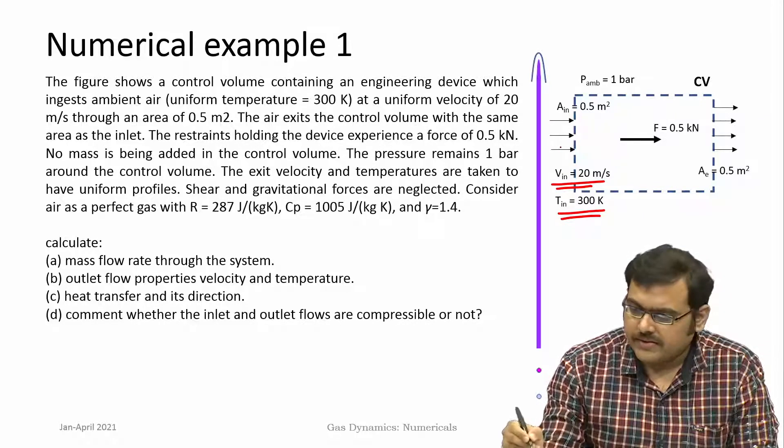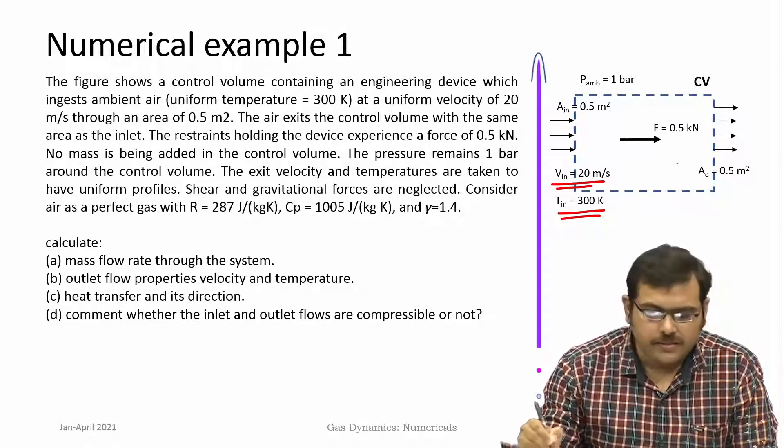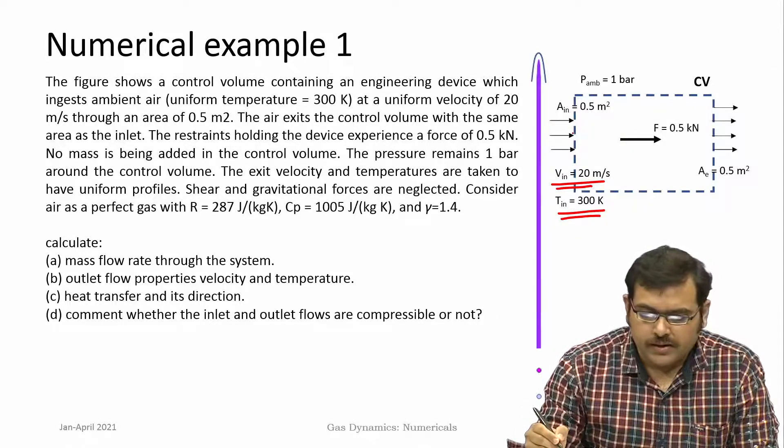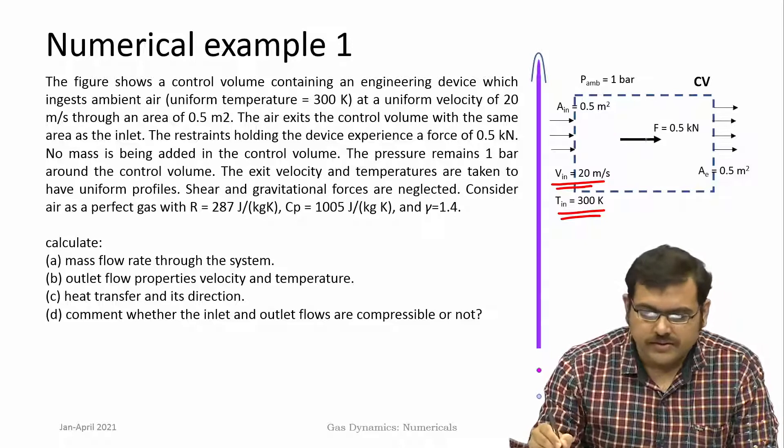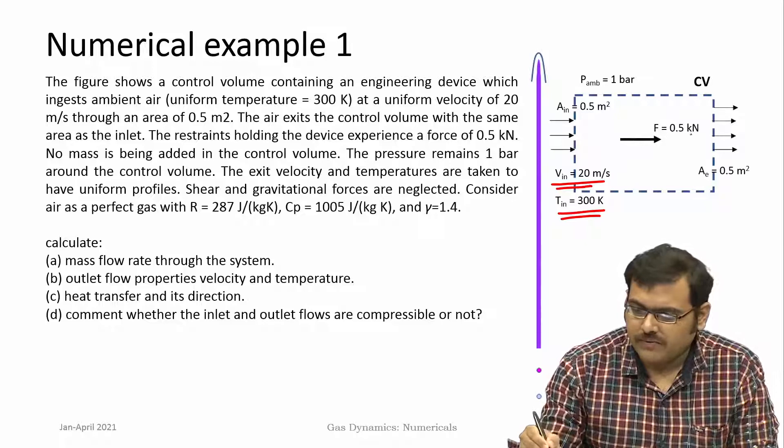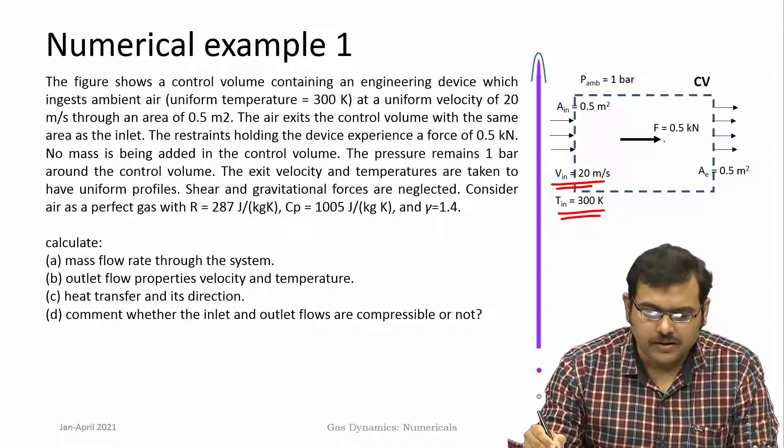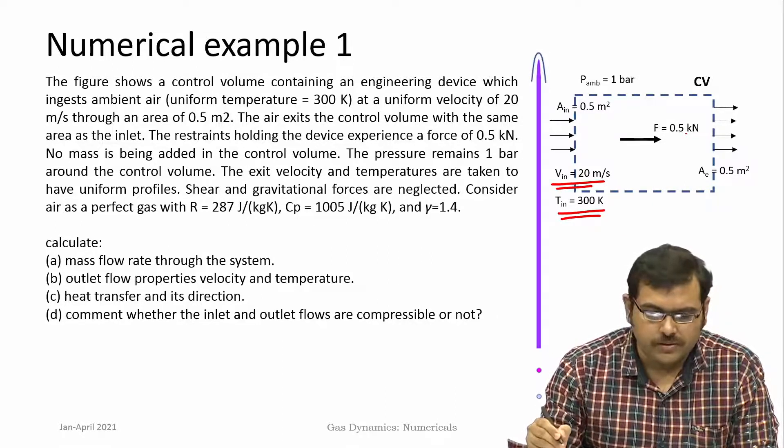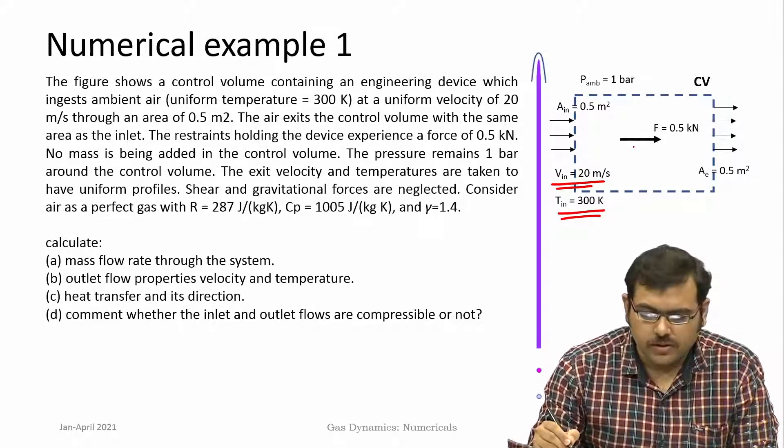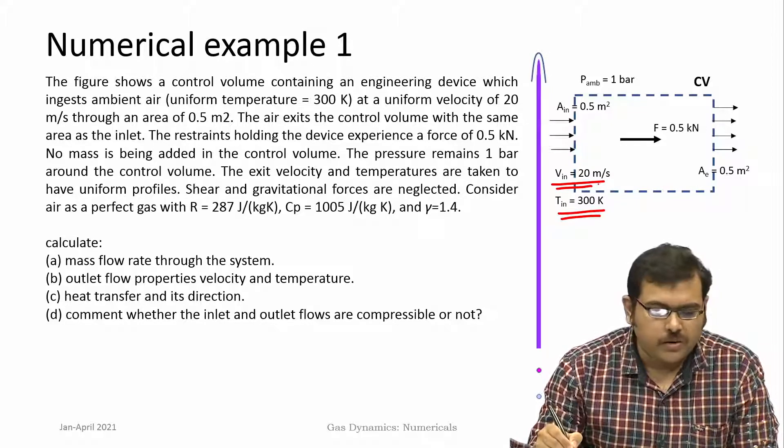The air exits the control volume and the area of exit is the same as the area of inlet, so A_e is A_in. This device is being held and the restraints holding the device experience a force of 0.5 kilo Newton. No mass is added into this control volume and pressure remains all over the surface at one bar.